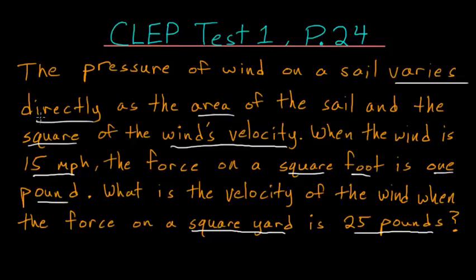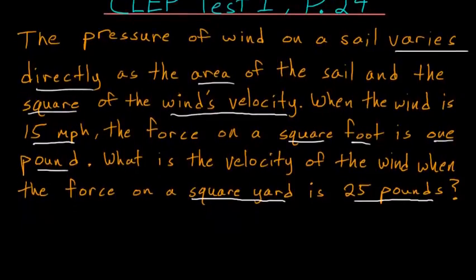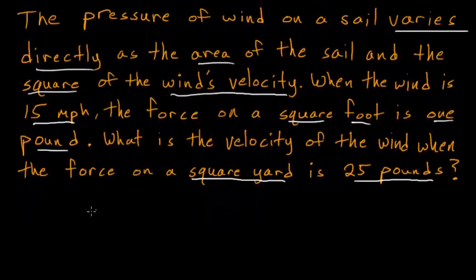So this problem deals with direct variation, and a common simple example of direct variation would be the equation y is equal to 2x, and essentially what it means is that every time x goes up, y goes up as well, and this 2 here is just the proportionality constant. So in other words, in this specific example, every time x goes up by 1, y goes up by 2, or if x goes up by 5, y goes up by 10.